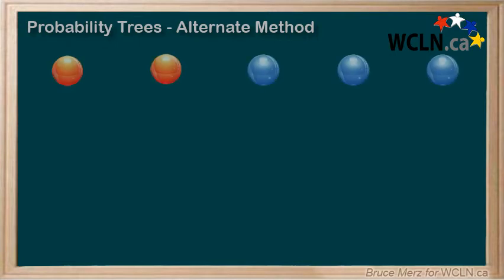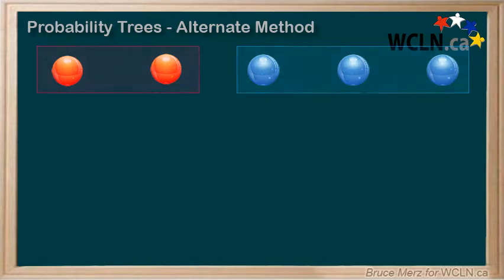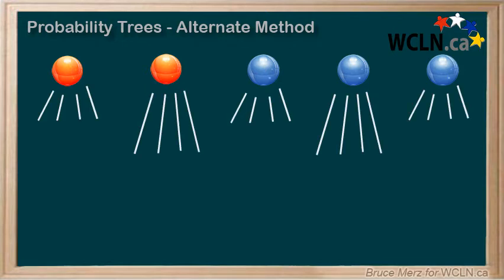And the tree we came up with looked like this. Five branches for the first choice of marble, two red and three blue. But since we're not replacing that marble, now there are only four branches left for each second choice. And that looked like this.